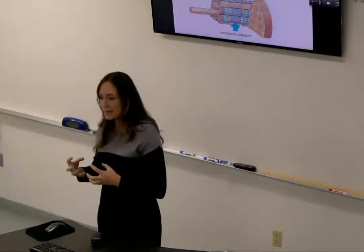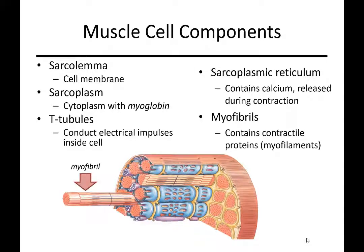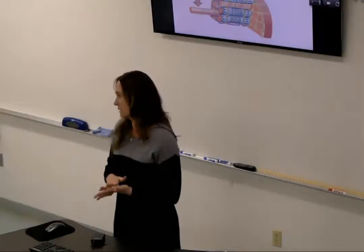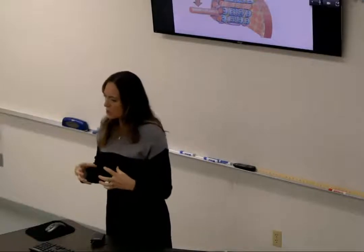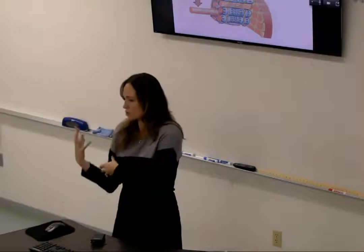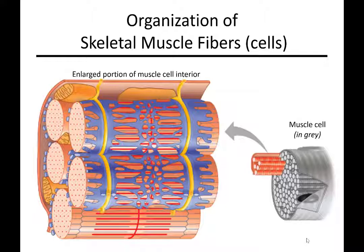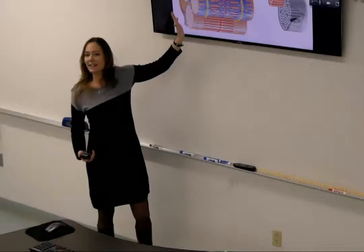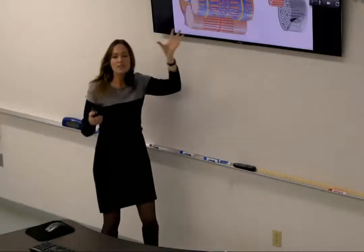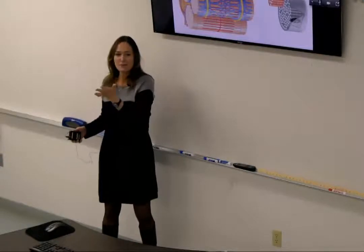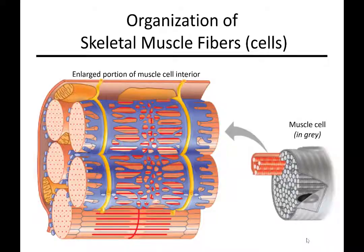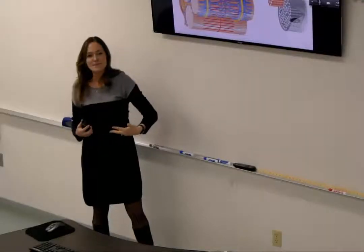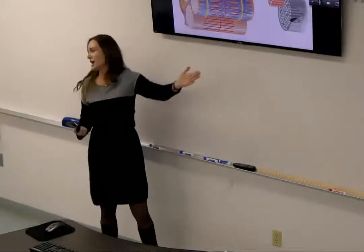The myofibril is the part that's actually going to be doing the contracting. We'll later learn about actin and myosin contained within these myofibrils that's actually doing the pulling — bringing the muscle together towards the midline, causing muscle shortening and causing your joint to move. On this muscle cell: the outer cell membrane is the sarcolemma, the fluid is the sarcoplasm, the yellow part brings electricity into the cell — T-tubules — the blue part holds calcium — sarcoplasmic reticulum — and what's doing the contracting? Myofibrils.